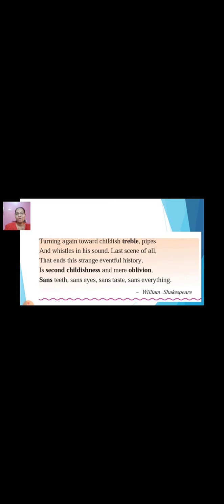'Last scene of all, that ends this strange eventful history, is second childishness and mere oblivion, sans teeth, sans eyes, sans taste, and sans everything.' The last stage of the life cycle is called second childishness. Why? Because when you are born as a child you are unaware of what is happening around you, you don't have teeth, your eyesight is not good, you cannot taste everything — and similarly these same conditions return in the very old age.